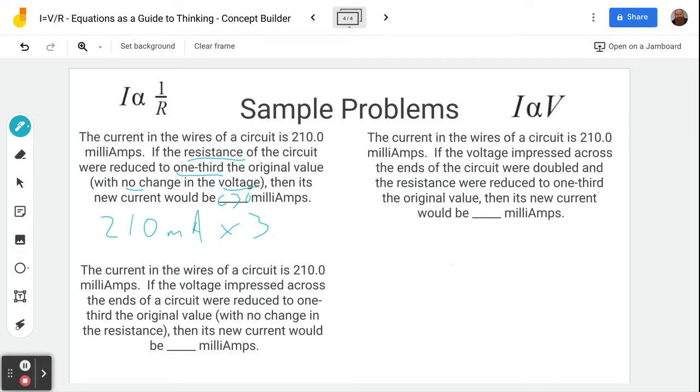Next question, we see the current in the wires of a circuit is 210 milliamps. If the voltage impressed, voltage is the thing we're going to be changing here, across the ends of the circuit were reduced to one-third the original value, with no change to the resistance, then the new current would be.